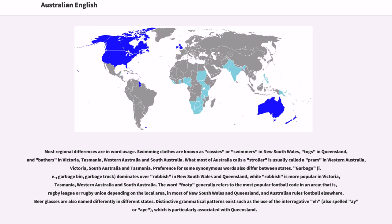Distinctive grammatical patterns exist such as the use of the interrogative eh, also spelled ay or aye, which is particularly associated with Queensland.